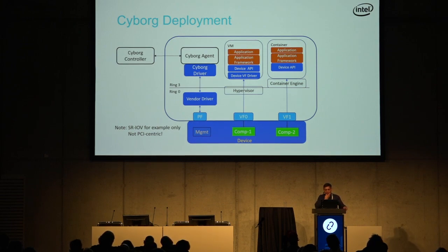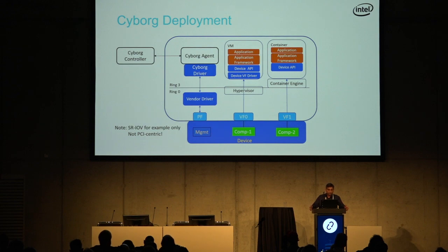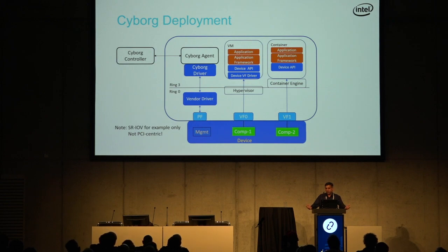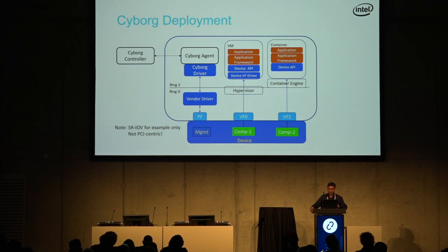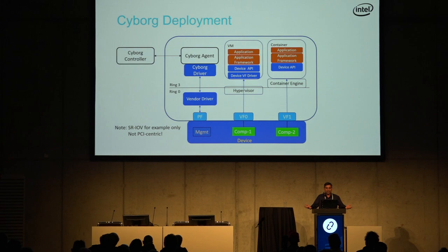I'm showing an example of an SR-IOV device here, though this is not a PCI-centric approach — we'll be starting with PCI devices in the initial implementation. If you think of an SR-IOV device with physical functions and virtual functions, we could take the physical function for management and orchestration, and the virtual functions for the data plane assigned straight to VMs or containers. You would also need something inside the VM — like a device driver for the appropriate device. If it's a GPU, you'd need an I915 driver from Intel, for example.